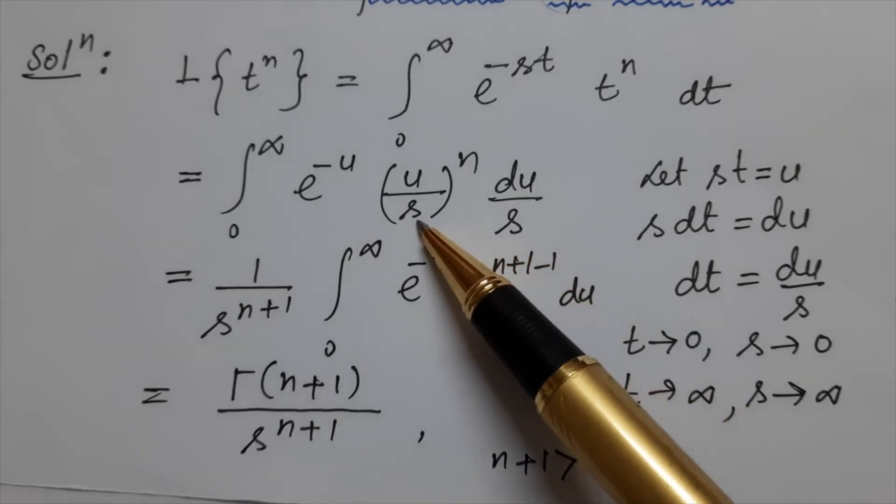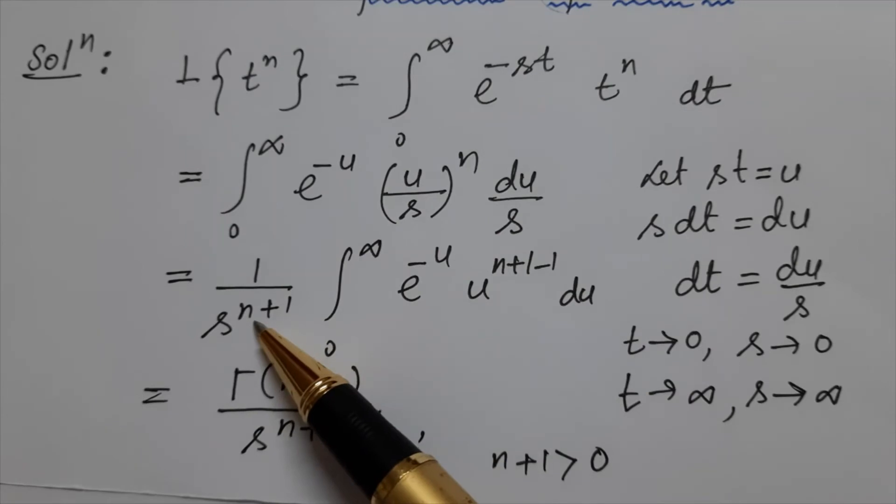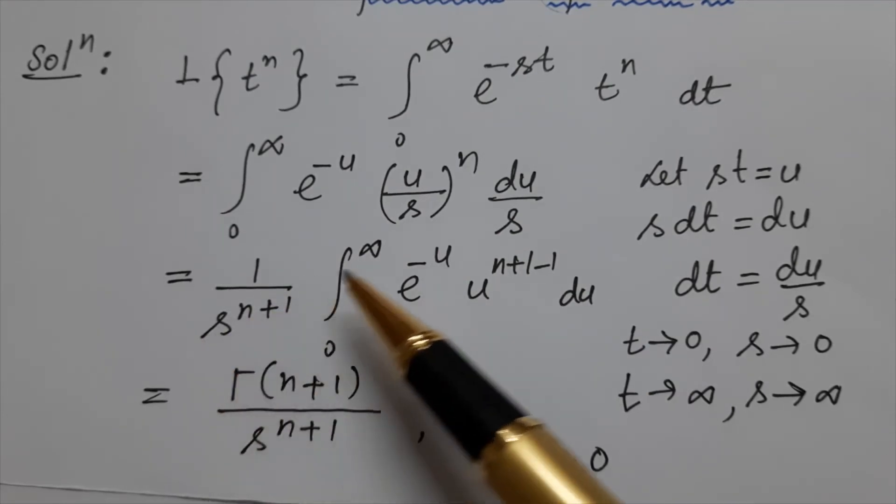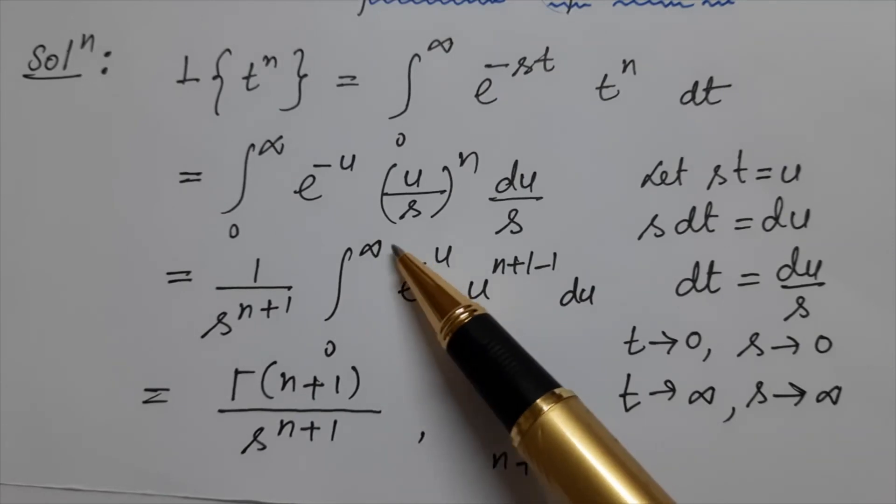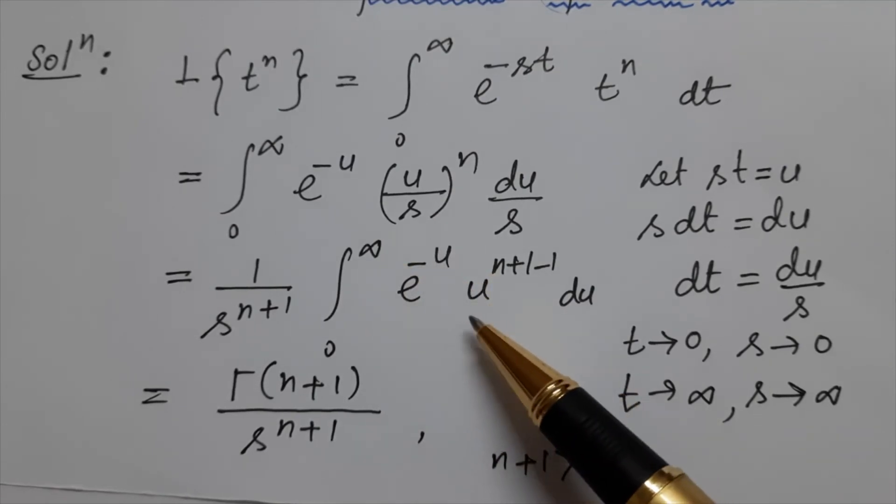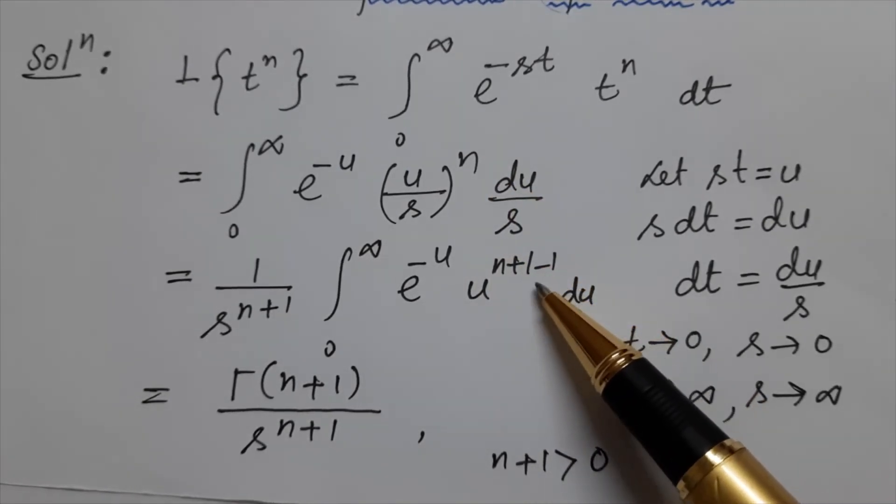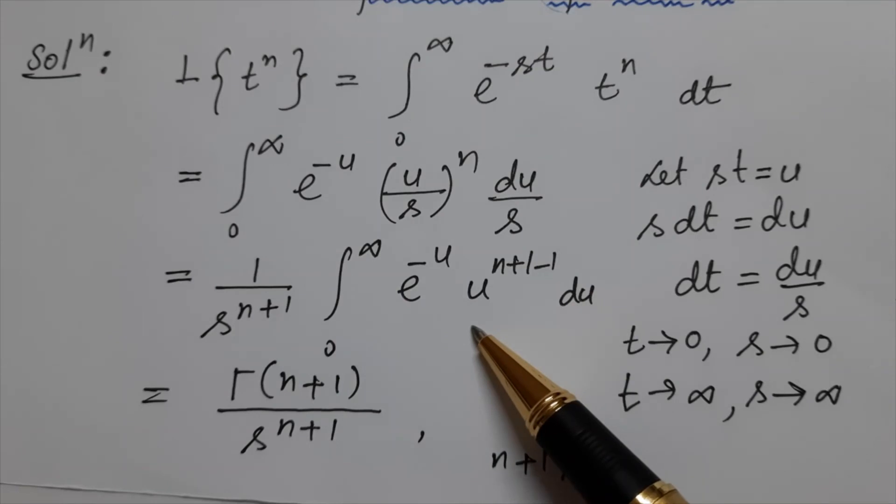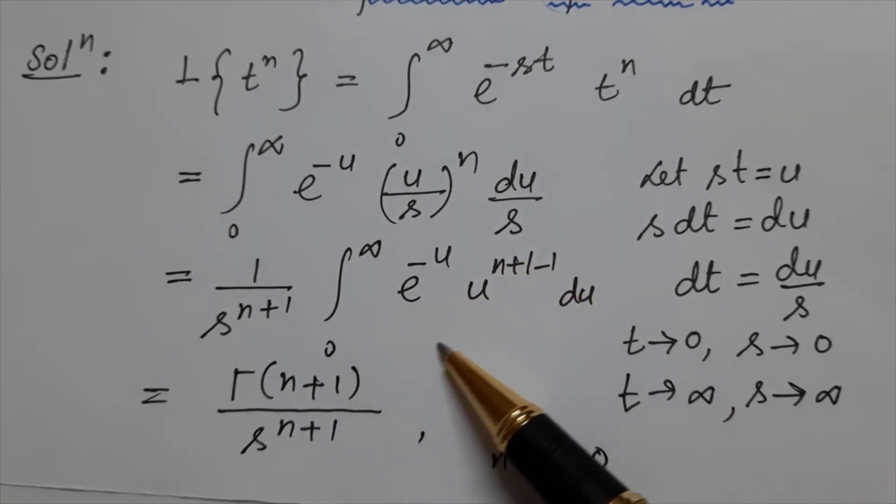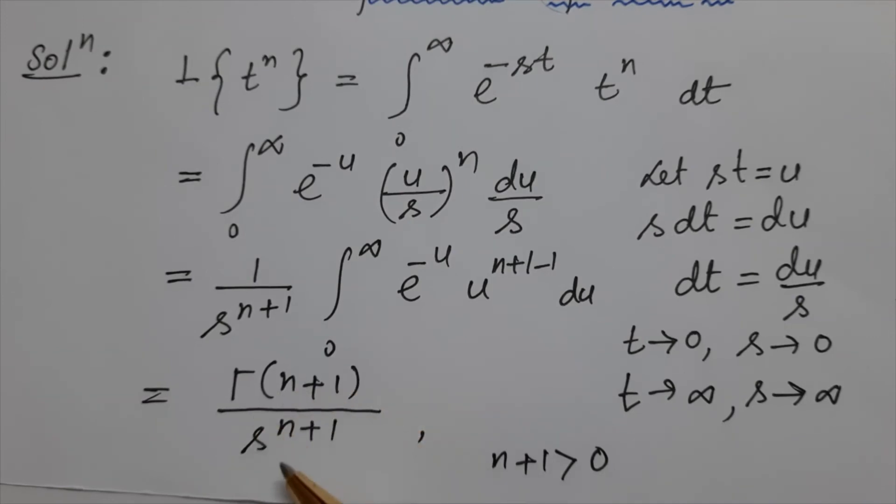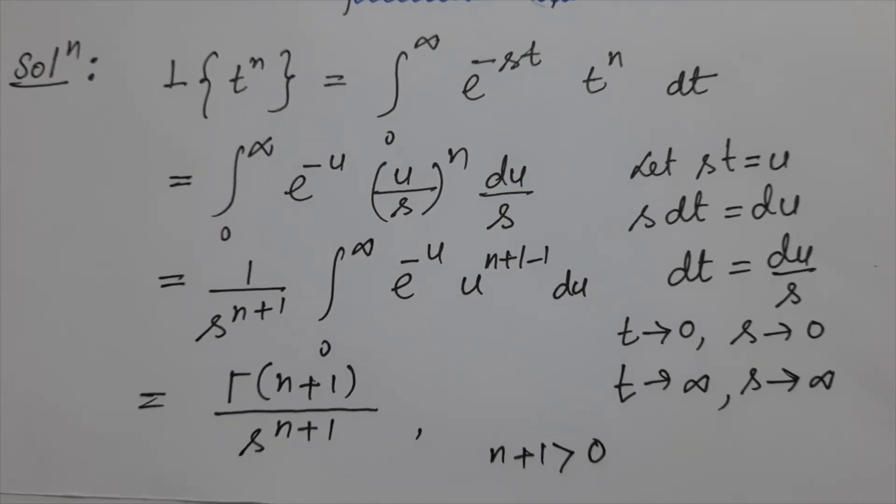Now here s power n and this s becomes s power n plus 1 and it is out of the integration. And we have the integration 0 to infinity e power minus u times u power, we can write this n as n plus 1 minus 1 to follow the gamma distribution. So we are getting the numerator as gamma of n plus 1 and the denominator as s power n plus 1. Here n plus 1 always greater than 0. So we say that Laplace transform of t power n exists.